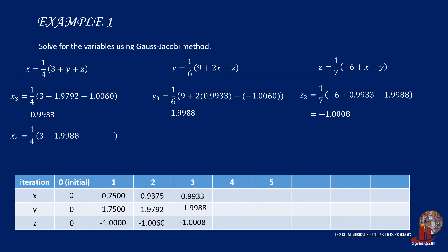Then continue to the next iteration with x sub 4, that is one-fourth times 3 plus 1.9988 minus 1.0008, which results to 0.9995. y sub 4 is one over 6 multiplied by 9 plus twice of 0.9995 minus negative 1.0008, and that gives 2.